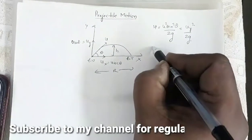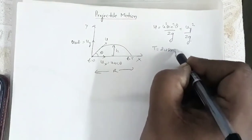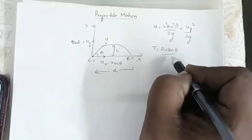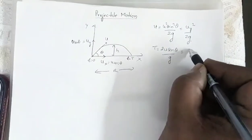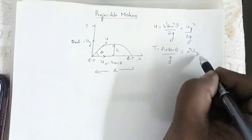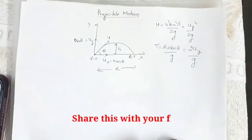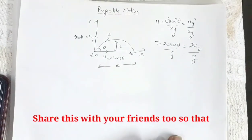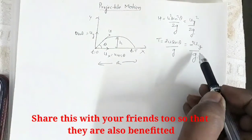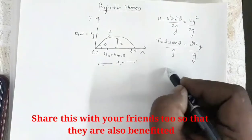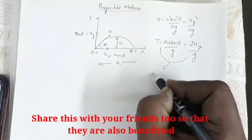Similarly, the time of flight T is equal to 2u sinθ divided by g. Since u sinθ is uy, I can write it as 2uy divided by g. So this is the time of flight.